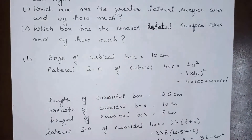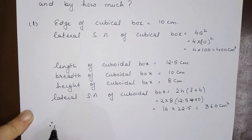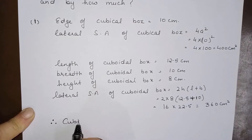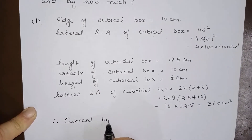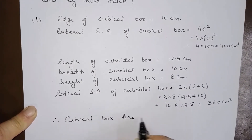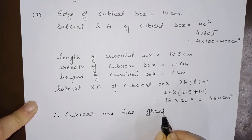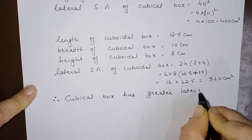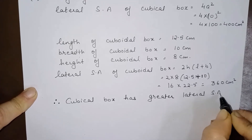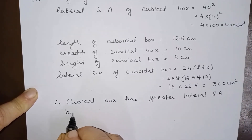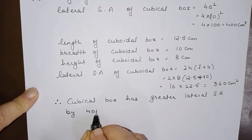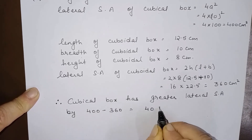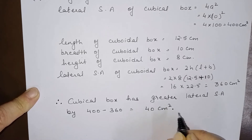So which box has the greater lateral surface area and by how much? Therefore, the cubical box has the greater lateral surface area, by 400 minus 360, that is 40 centimeter square.